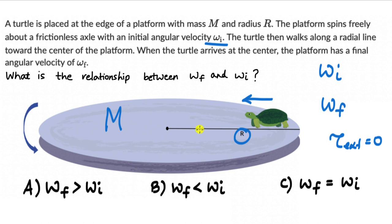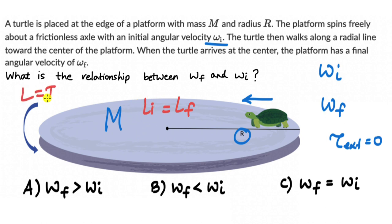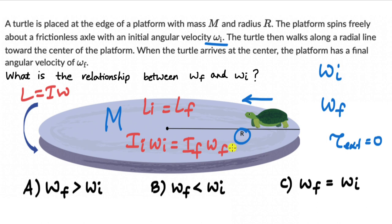If you think about the platform and the turtle as a system, there is no external torque. The external torque is zero for this system as well — the turtle moving towards the center is still internal to the system. When there is no external torque, the angular momentum is conserved. This means the initial angular momentum equals the final angular momentum. Writing it out: I_initial × ω_initial = I_final × ω_final.